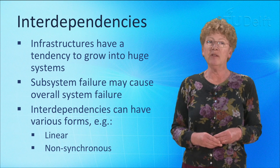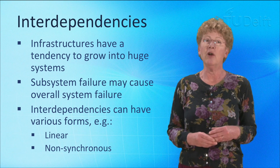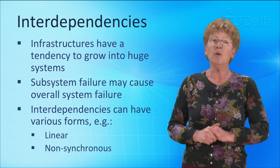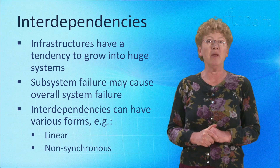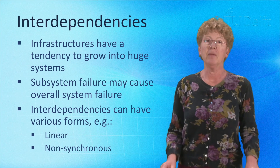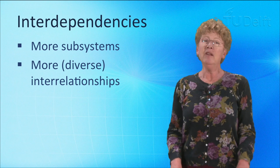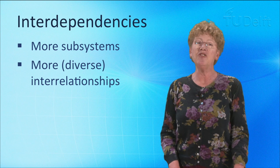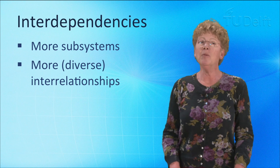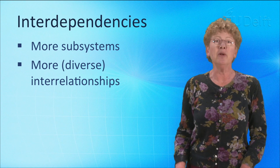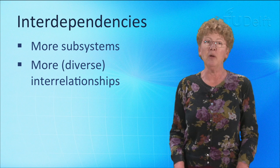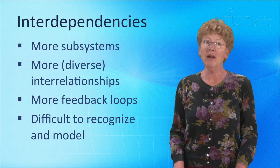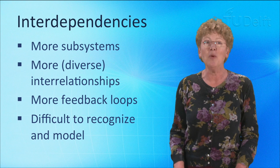The non-linearities caused by feedbacks between subsystems, across system levels and across time scales are the main cause of emergent behaviour of the aggregated system — that is, the system as a whole. As the number of subsystems and interrelationships increases, and as those interrelationships become more diverse, it becomes more difficult to gain an overall view of the system and to know all the feedback loops. Eventually, the system will become so complex that the analyst can no longer recognise or model it at all.